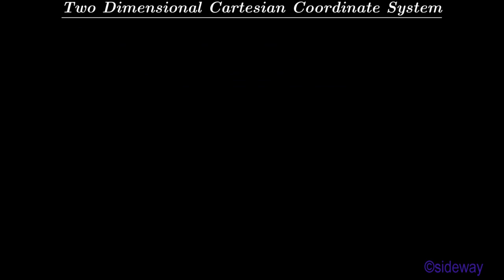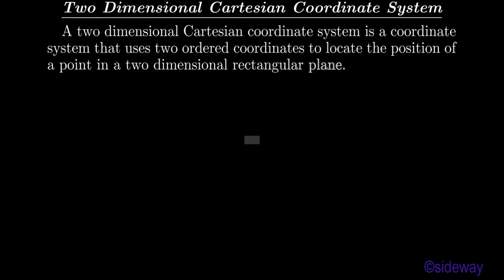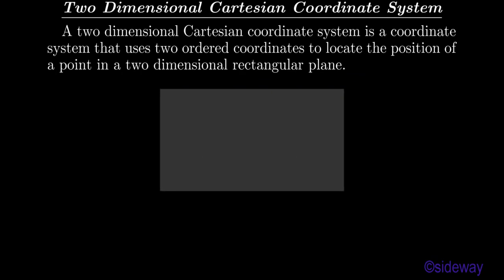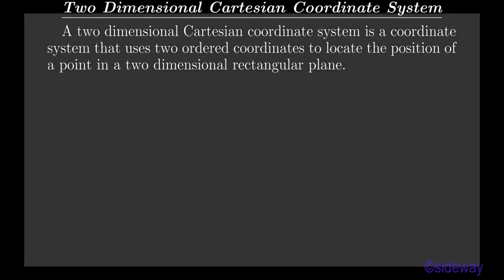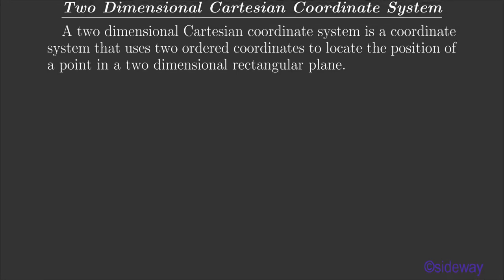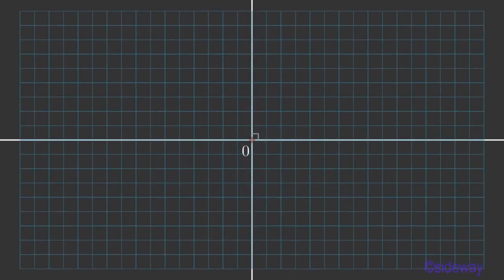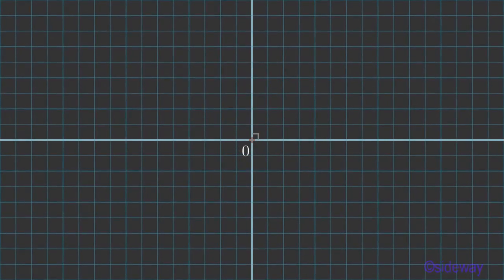Two-dimensional Cartesian Coordinate System. A two-dimensional Cartesian coordinate system is a coordinate system that uses two ordered coordinates to locate the position of a point in a two-dimensional rectangular plane. Two arbitrary perpendicular number lines in the plane are chosen as the coordinate axes. The point intersected at the respective origins of axes is the origin, or position 0, of the two-dimensional Cartesian coordinate system, where something begins or emanates from. The ordered coordinates of a point in the rectangular plane are defined as the projected measurement of the signed distances, measured along the corresponding axis from the respective origins of axes accordingly.